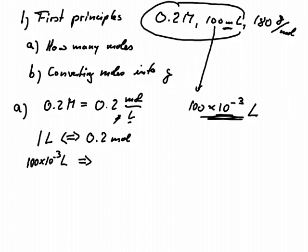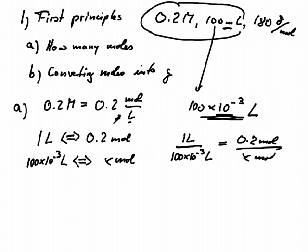And we want to figure out how many moles we have in here. And we can write this as a rule of three. So we can write one liter divided by 100 times 10 to the minus 3 liter is the same as 0.2 mole divided by x mole. And we bring that to this side.